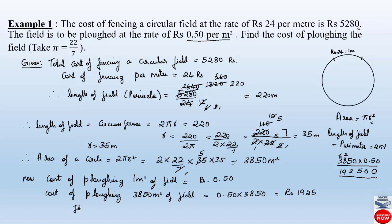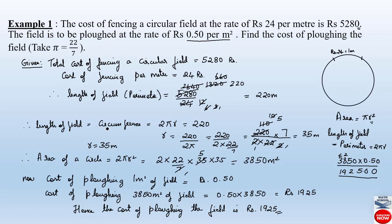Hence the cost of plowing the field is rupees 1,925. This is an easy example if you understand the question. First we found the length of the field, then calculated the radius using the circumference formula 2πr. After finding the radius we applied the area formula, found the area of the circular field, and then determined the total cost to plow the field.